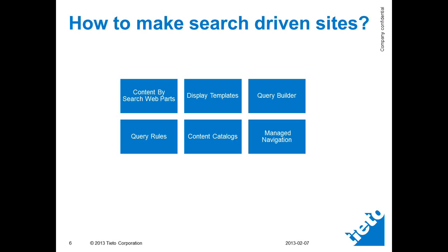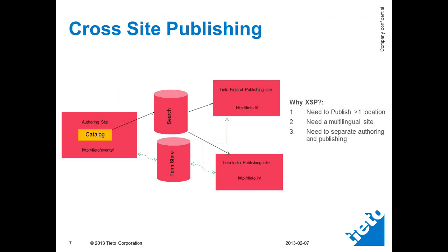Content catalog is again a new concept. You can think of content catalog like this: there are two ways to use content — either you publish at the source and the same content should be surfaced at the destination. I have a next slide to show what I mean by this. For example, cross-site publishing — you see here.